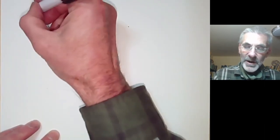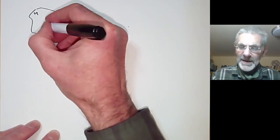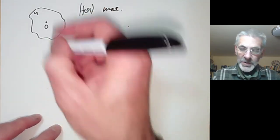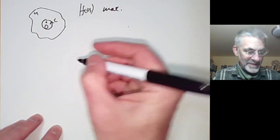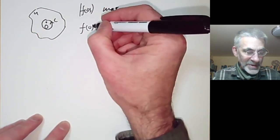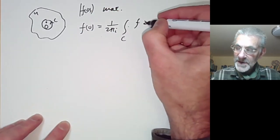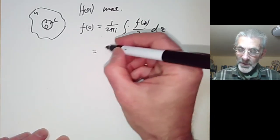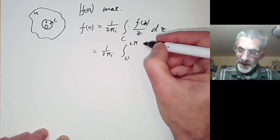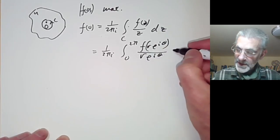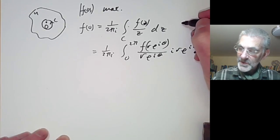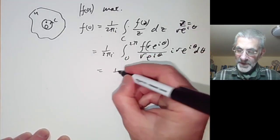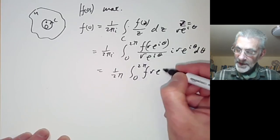Suppose we have some open set u and some point where f is maximum. For simplicity, let's make this point zero, so suppose f(0) is maximal. We pick a little curve c around zero and apply Cauchy's integral formula: f(0) = (1/2πi) ∫_c f(z)/z dz. Parametrizing with z = re^{iθ}, this becomes f(0) = (1/2π) ∫_0^{2π} f(re^{iθ}) dθ.